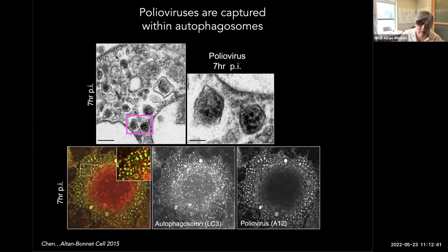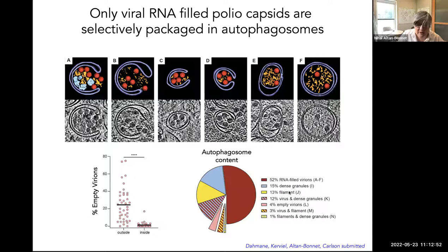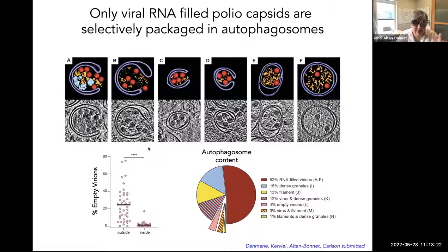You can see this in transmission EM images inside the cell showing autophagosomes with multiple poliovirus particles, also by immunofluorescence with autophagosomal markers and antibodies that recognize newly assembled poliovirus particles. More recently, we've been doing cryo-EM work with Lars-Anders Carlson in Sweden, and we can see that this packaging into autophagosomes is very selective — it only captures the RNA-filled infectious capsids of poliovirus. Empty capsids, which look translucent in cryo-EM, very rarely get packaged for transmission.